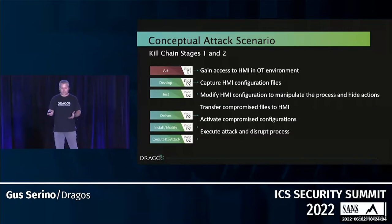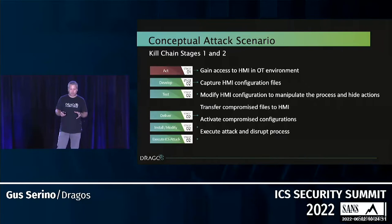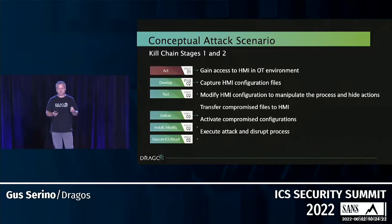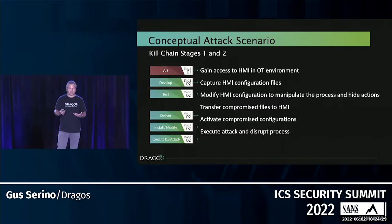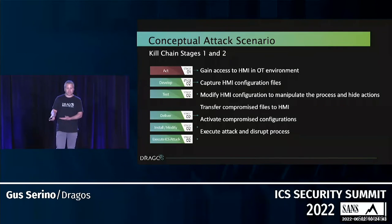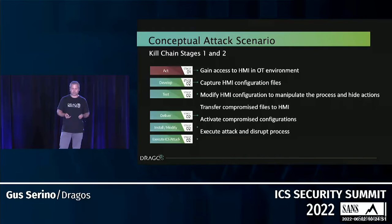So that's the idea. I want to pivot and talk about this in the framework of the ICS kill chain with a conceptual attack scenario. The adversary gains access to the environment and then to an HMI. Once they recognize it's an HMI and start working with SCADA, that's when we transition from kill chain stage one to stage two. I want to highlight how much can be done with an HMI — without changing PLC code — to abuse the process, and why HMIs are a crown jewel that deserve extra security attention.